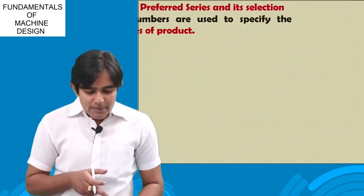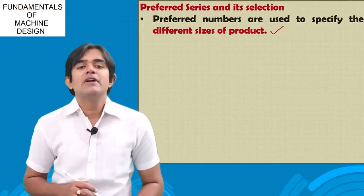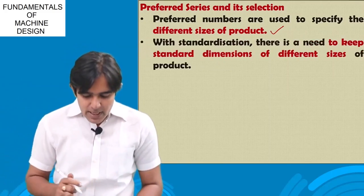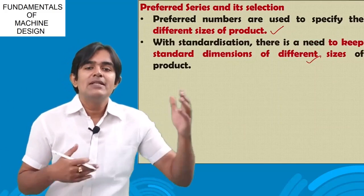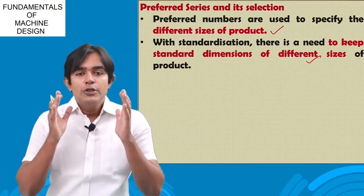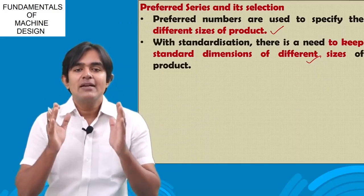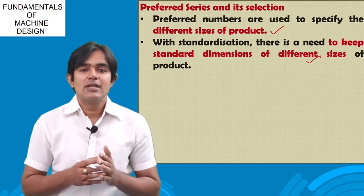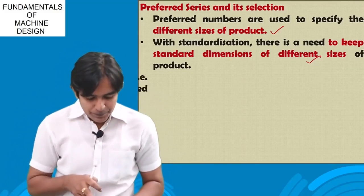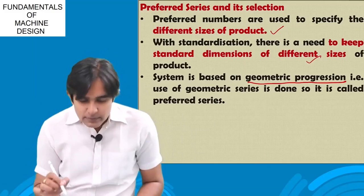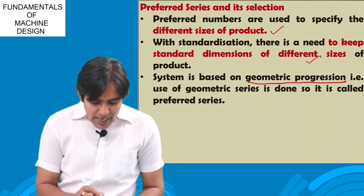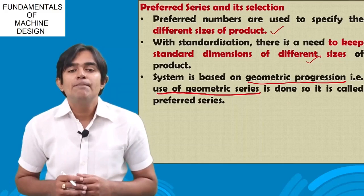Preferred numbers are used to specify different sizes of products — only those sizes which the customer is going to use — and to keep standard dimensions of those sizes. We have seen the concept of standardization previously. Standardized parts are used by customers more, so if I want to prefer standardized parts, I should go for preferred series. There is a link between standardization and preferred sizes. Geometric progression is used in the preferred series.